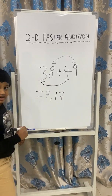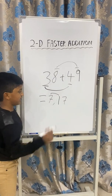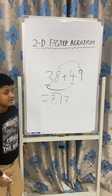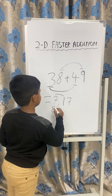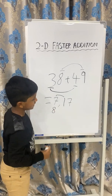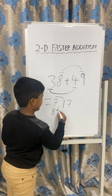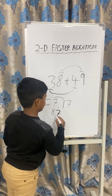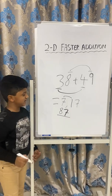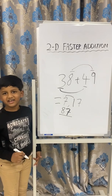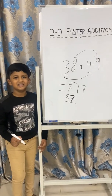Here, we carry this 1 to the 7. That gives us the answer 8. And then we write the 7 down here. That gives us the answer to this question: 87. See, it is so simple.